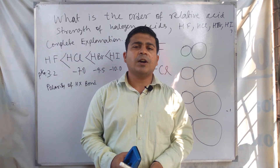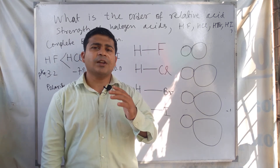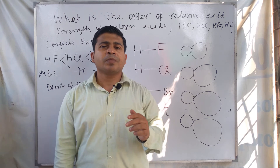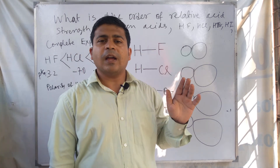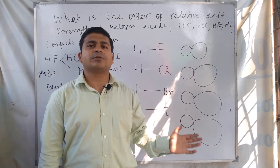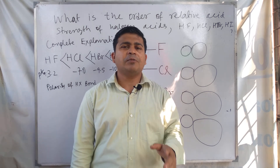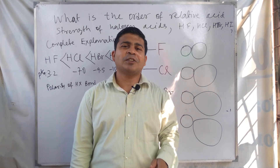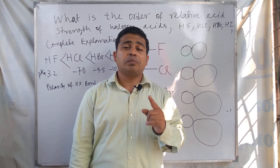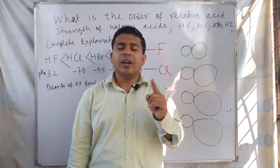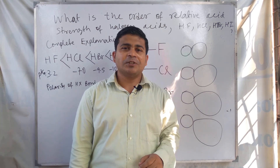So this concludes the discussion regarding the order of acid strength of the halogen acids. I think you understand what the order is and why it is found. If you have any questions, you can ask in the comment section below. Do not forget to subscribe to this channel and press the notification button to get this type of educational video. Thank you for watching this discussion.